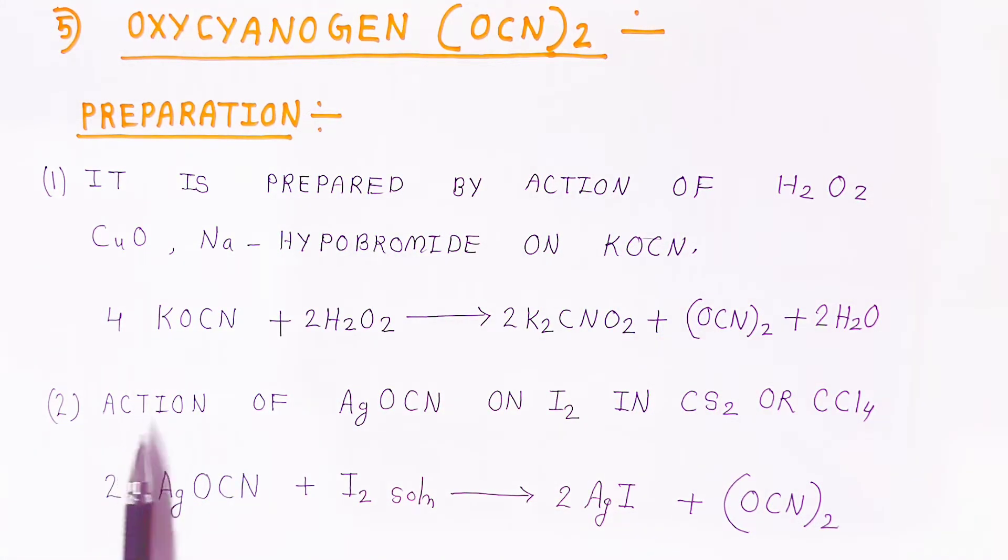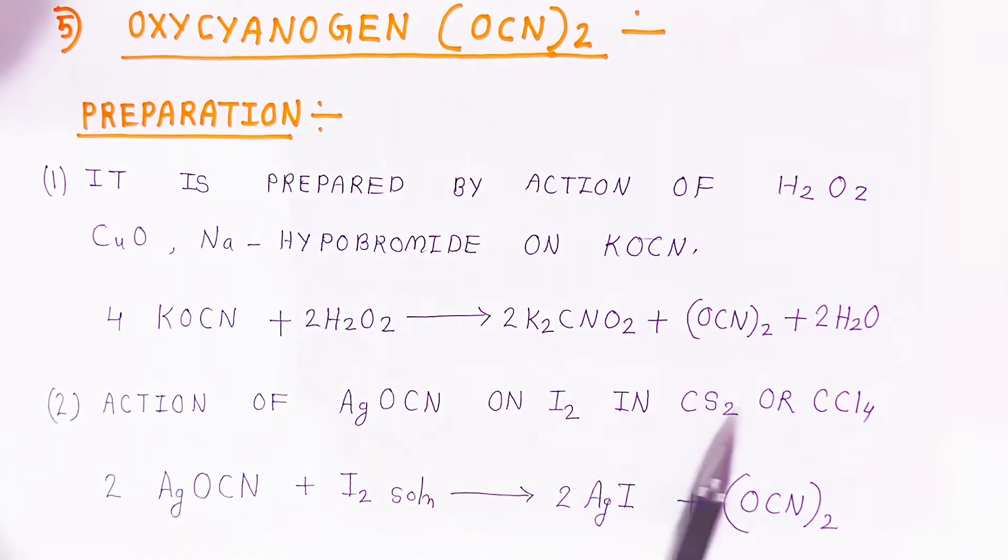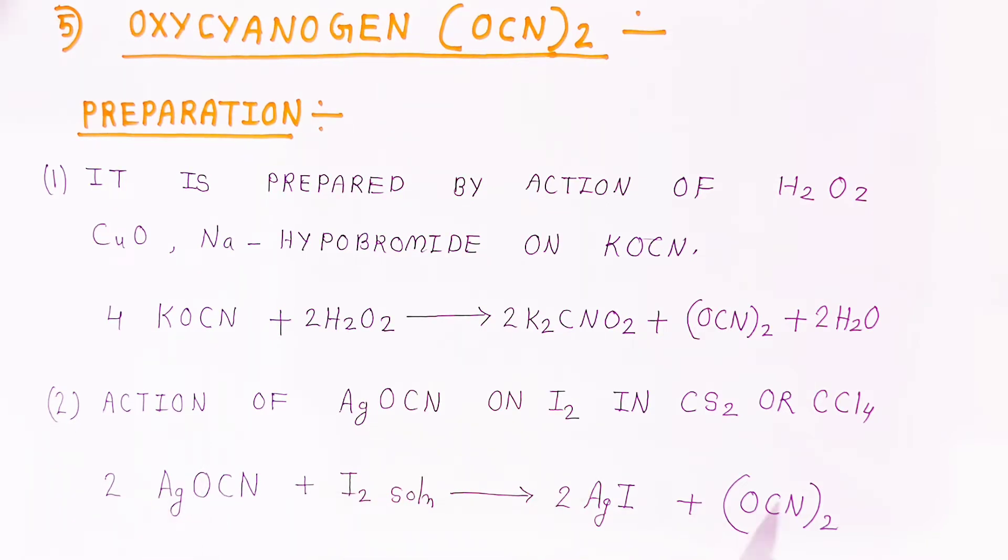Second preparation: action of AgOCN when it reacts with iodine in the presence of CS₂ or CCl₄. What happens? You will get oxycyanogen and silver iodide. When iodine reacts with this, you are getting silver iodide and oxycyanogen.